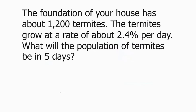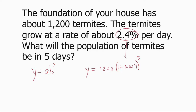Let's look at two examples, one of growth and one of decay. The foundation of your house has about 1,200 termites. They grow at a rate of about 2.4% per day. What will the population be in five days? We have y equals a times b to the x. Here a equals 1,200, x equals 5, and b equals 1 plus 0.024. So y equals 1,200 times 1.024 raised to the fifth power.